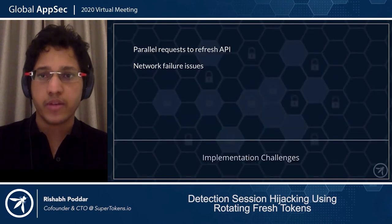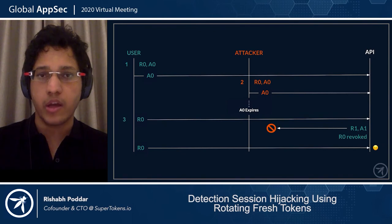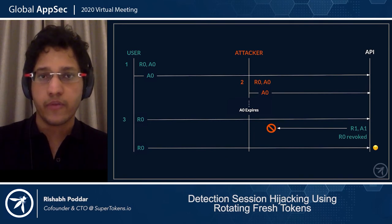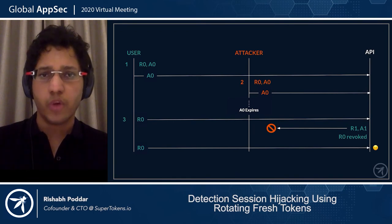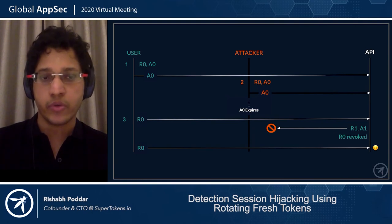The second problem is network failures. When the user uses R0, we expect the front end to receive R1 and A1. But if the front end is in a poor network location, it may not receive R1 or A1, which means it would have to use R0 again — yielding a false positive because R0 has already been revoked. The root cause of both these issues is that we are revoking R0 before knowing that the new set of tokens has actually been delivered to the client.